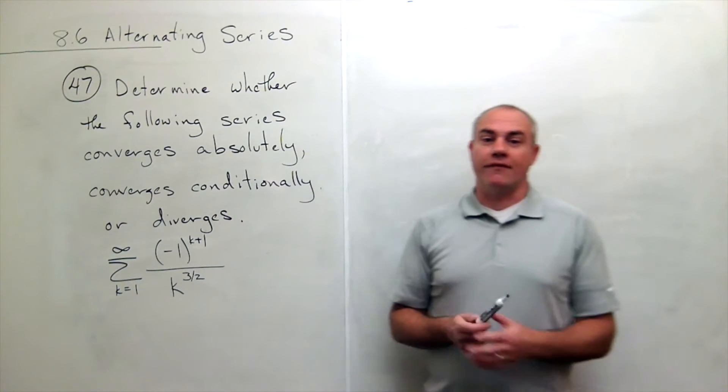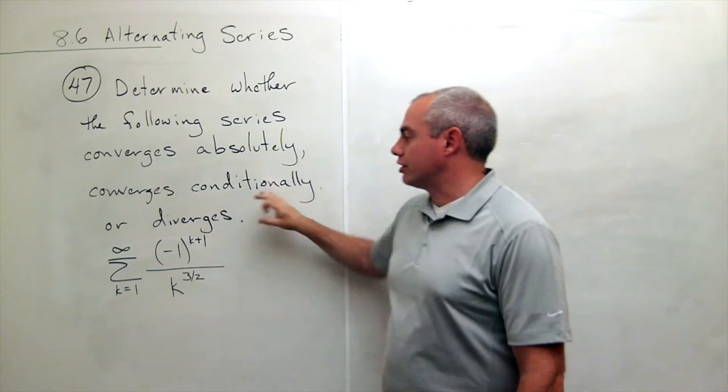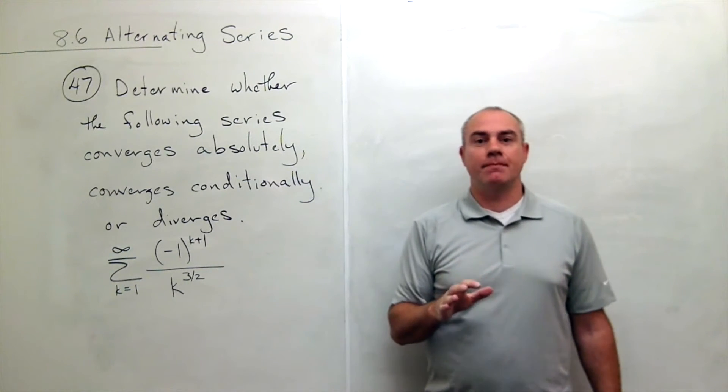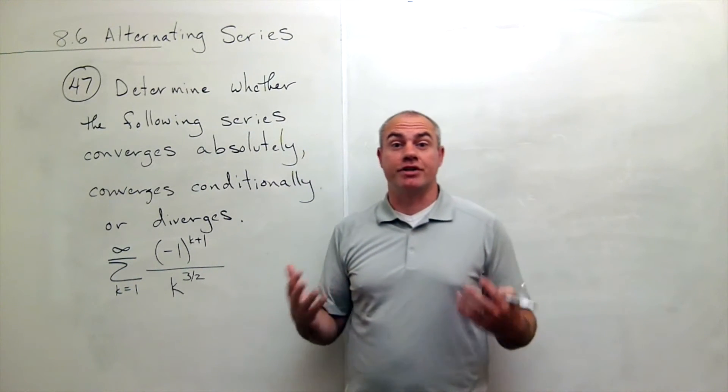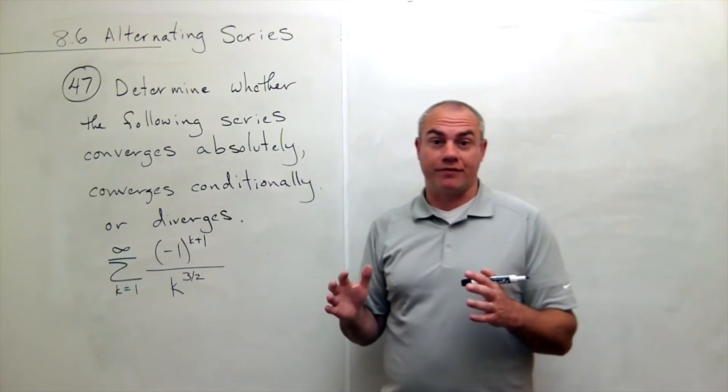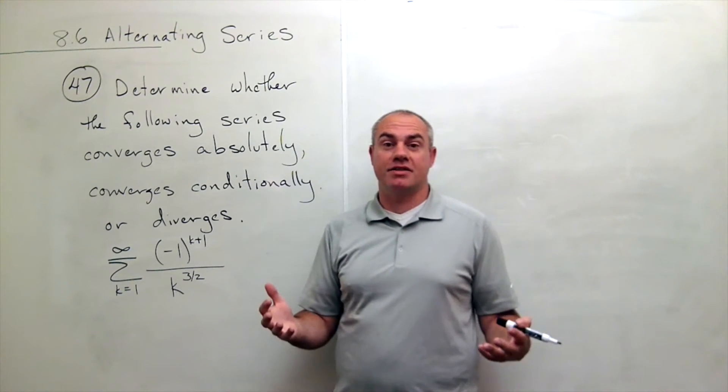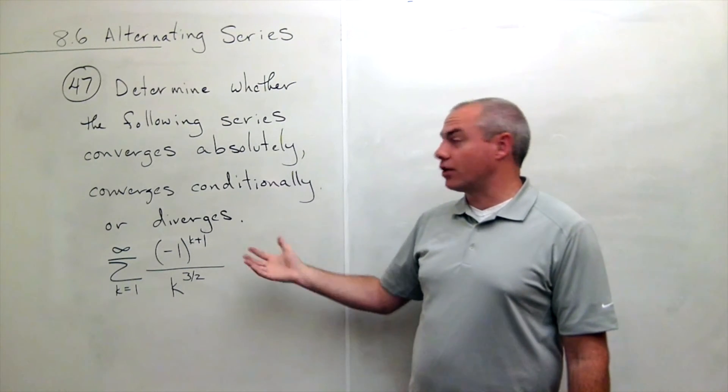Alright, so again, if I'm trying to figure out if something converges absolutely, conditionally, or diverges, the first thing I typically look at is does it converge absolutely? In other words, if I ignore the alternating part of this thing, where I ignore the negatives and make everything positive, then does it converge?